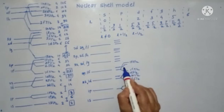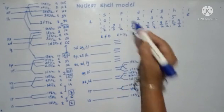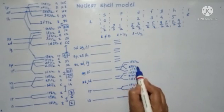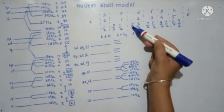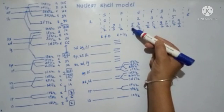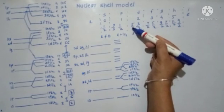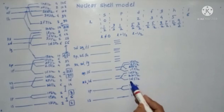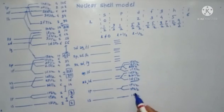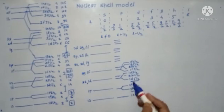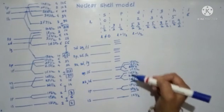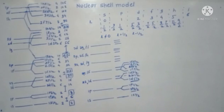The 2p orbital splits again into 2p 3/2 and 2p 1/2. We can see that 5/2 is having more stability, therefore it is shifted downwards. So 5/2 is written downwards and d 3/2 is written upwards. Similarly, p 3/2 is more stable than p 1/2. You can draw the diagram accordingly and I have already drawn this diagram.